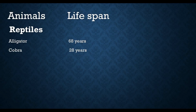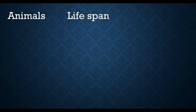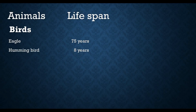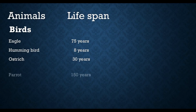Turtle lifespan is 160 years. Next are birds: eagle lifespan is 75 years, hummingbird lifespan is 8 years, ostrich lifespan is 30 years, and parrot lifespan is 150 years.